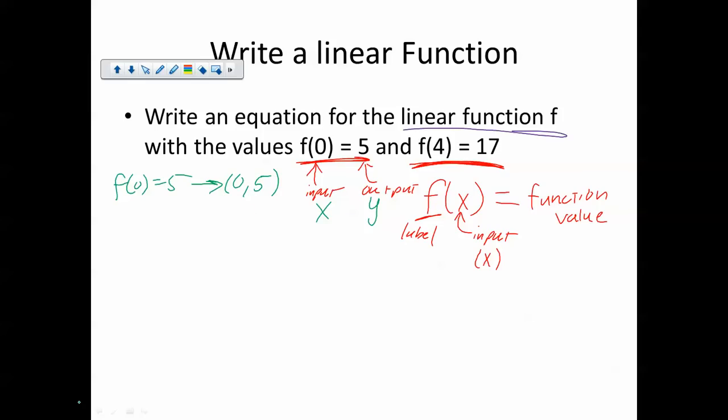It's a fancy way, it is a function notation way of writing the point (0,5). And f of 4 equals 17 is simply the point (4,17). It is a fancy way of writing that point in function notation. Remember, x values are our inputs. They are our domain. Let's write that word down so it's one that we remember. This is the domain. This is the range. The y values are the output values. They are the range. They are the function values. Those are all words that mean the same thing. Y, output, range, function value, all the same thing.